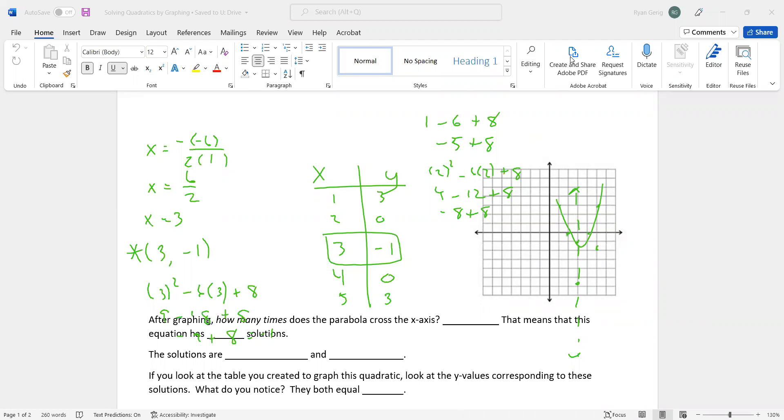After graphing, how many times does the parabola cross the x-axis? Well, it crosses twice, right? That means that this equation has two solutions. The number of times it crosses the x-axis, which is right here, that is where you find your solutions. The solutions are x = 2 and x = 4. The specific places where they cross are my solutions. So 2 and 4.